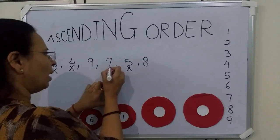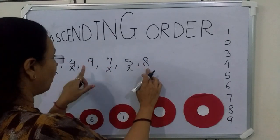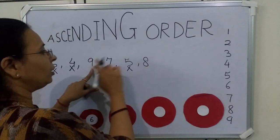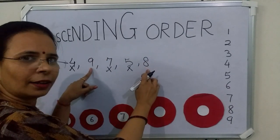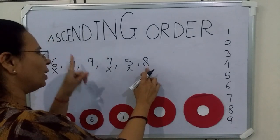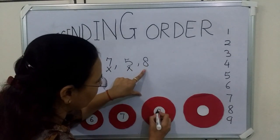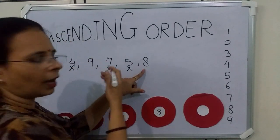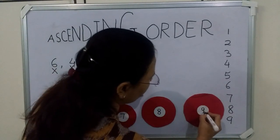Now we have written 7. Now we have to find which is smallest: 9 or 8? Is 9 smaller than 8? No. 8 is smaller than 9, so we have to write 8. And what is left? 9. So we will write 9 here.